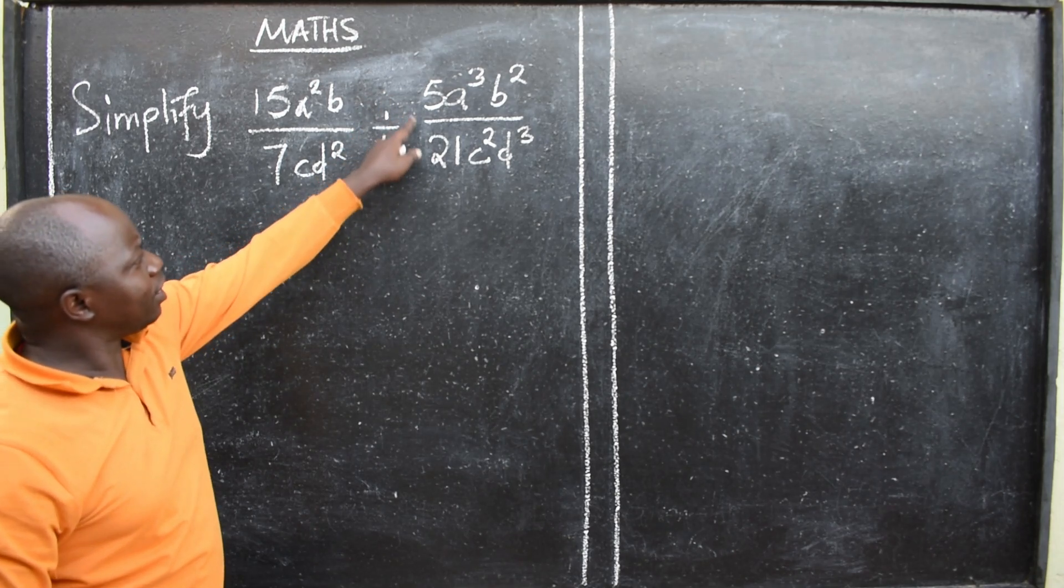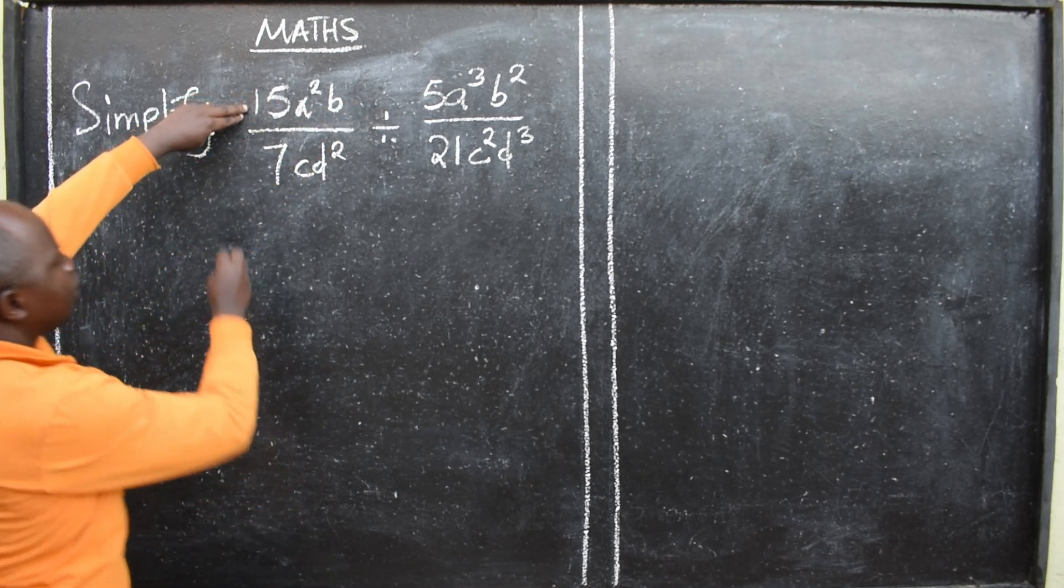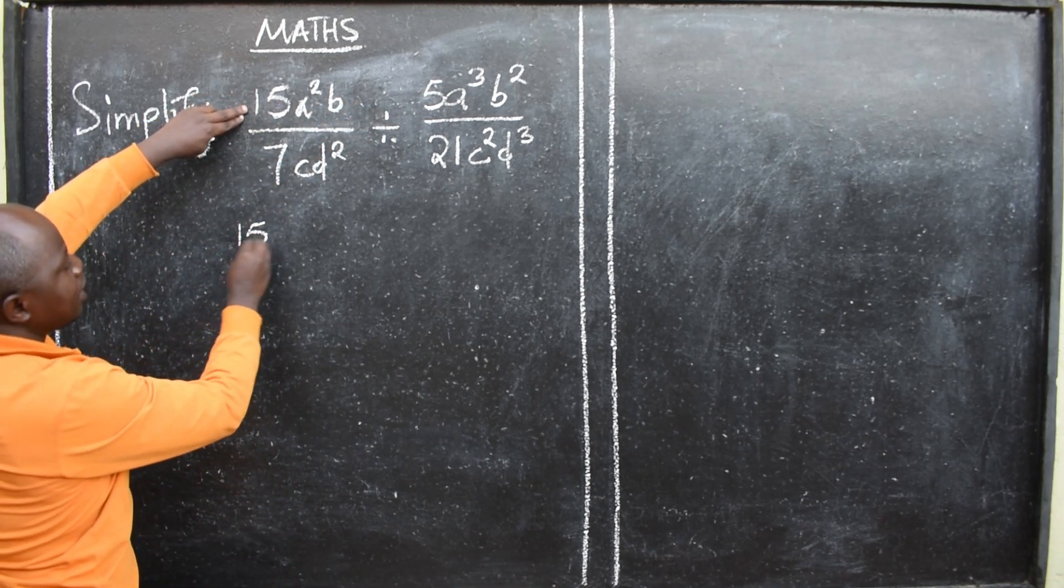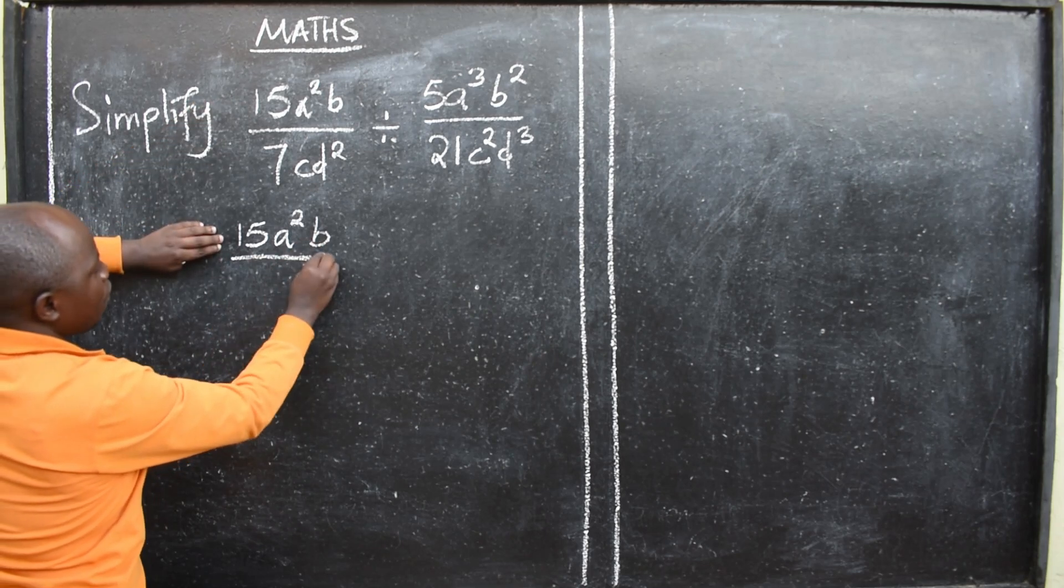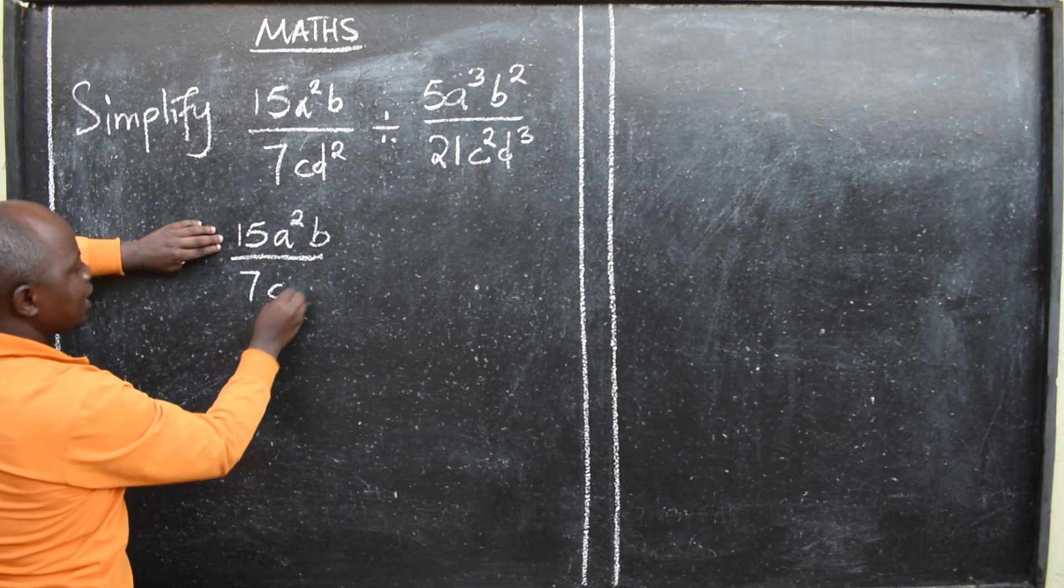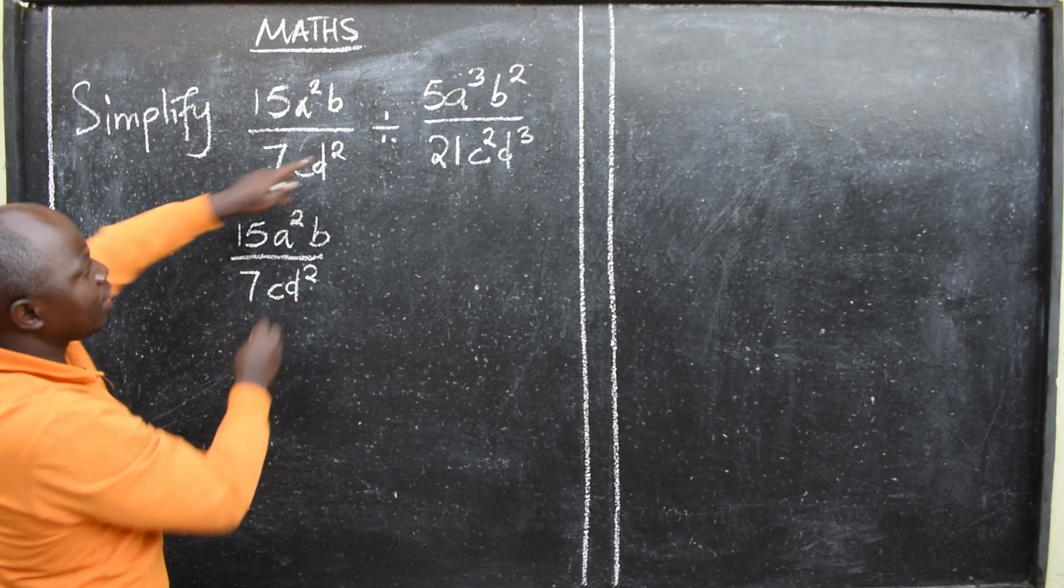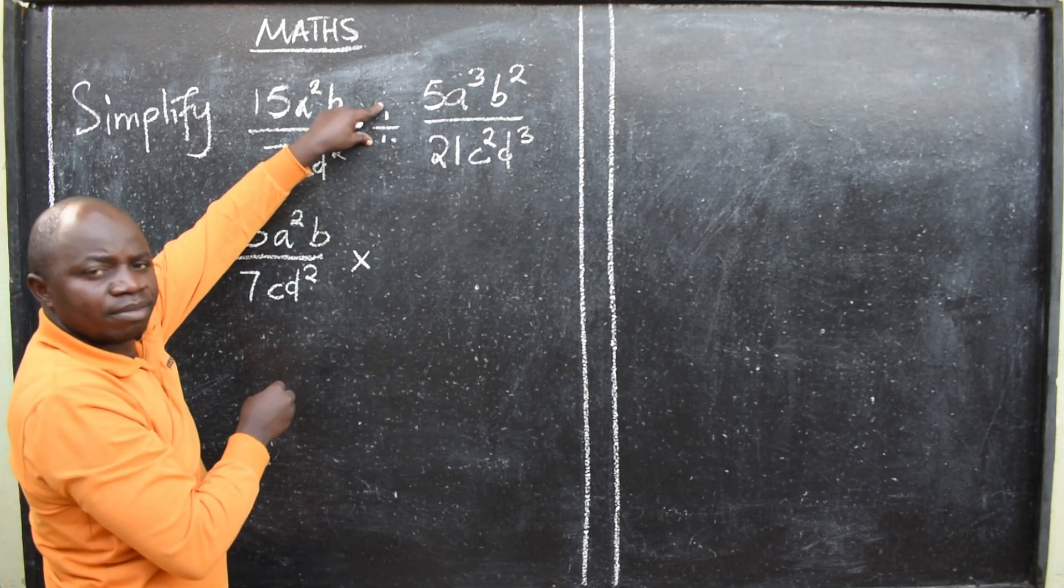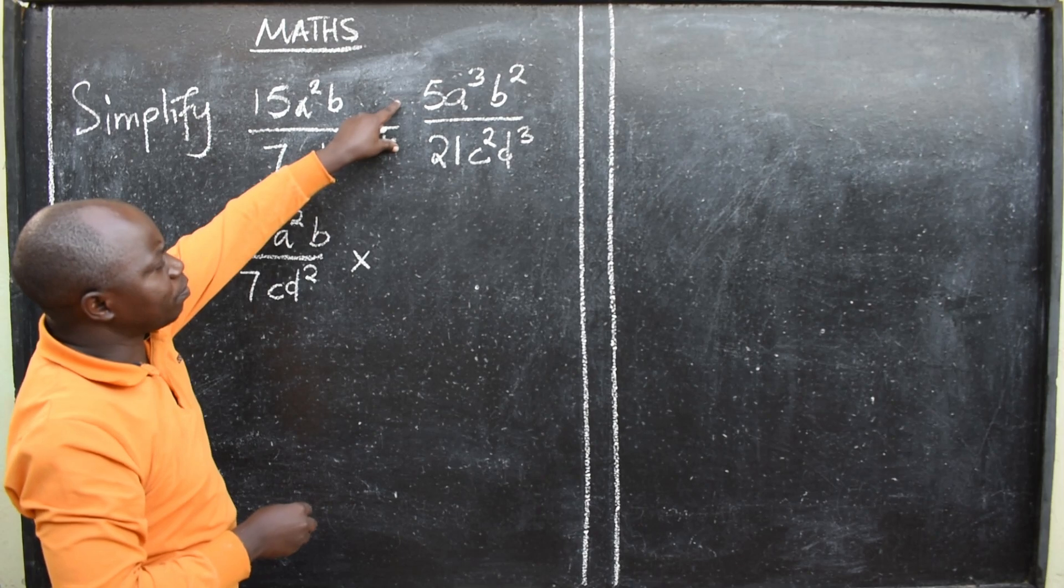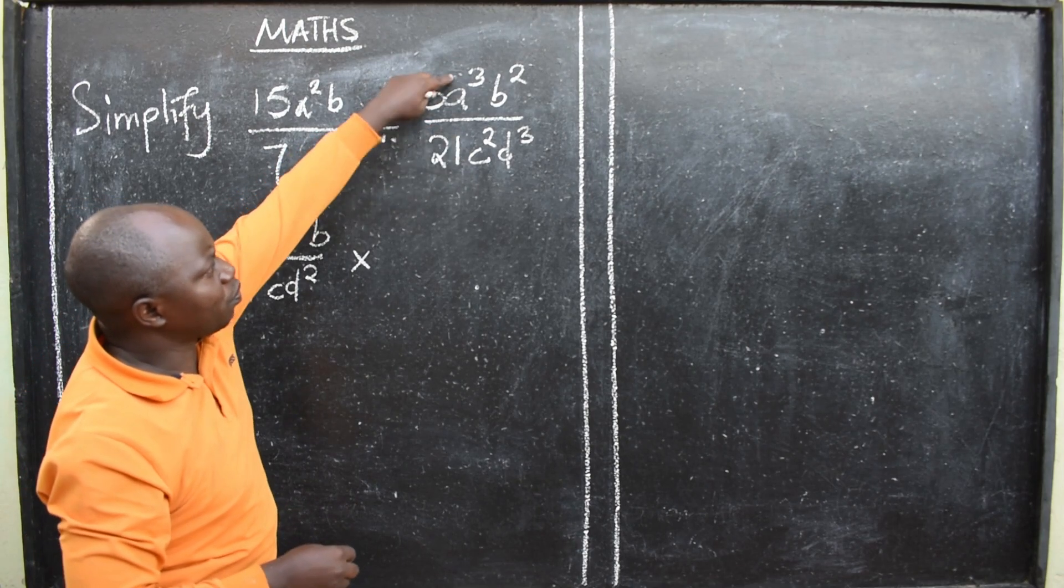Where there is division, we are going to say 15a² b over 7cd². You are going to change division to multiplication. When you change to multiplication, these two will swap.